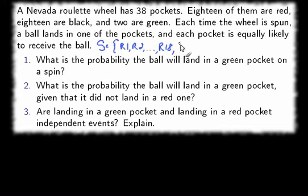There are 18 black ones, which we will call black 1, black 2, so on and so forth to black 18, and then two greens, which we will call green 1 and green 2. So that's the sample space.